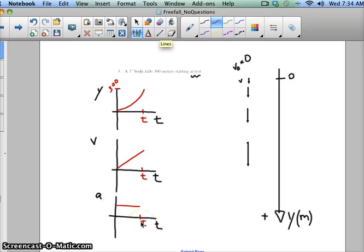So my acceleration is constant. And I'm going to label 10, positive 10, because down is positive. Then the acceleration due to gravity is positive. So it's going to look like this.